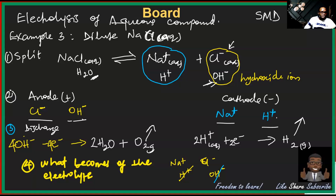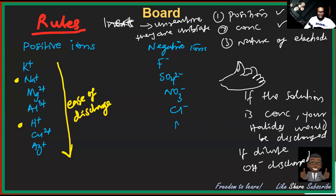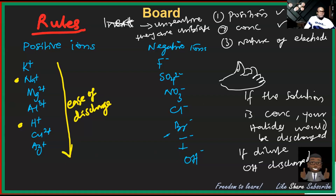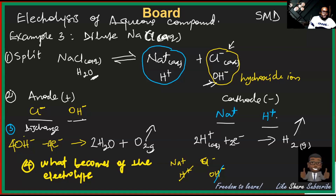So we have completed the electrolysis of dilute sodium chloride. Now let's move to example four: electrolysis of concentrated sodium chloride, also called electrolysis of brine. This is still an aqueous solution, so sodium chloride still splits into sodium ions and chloride ions, with water providing hydrogen and hydroxide ions — four ions in total.